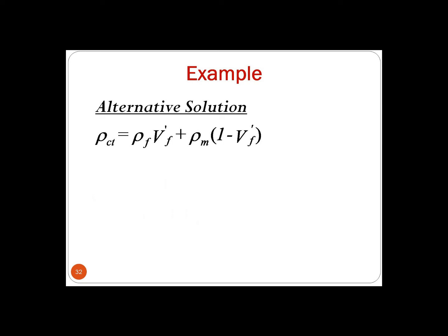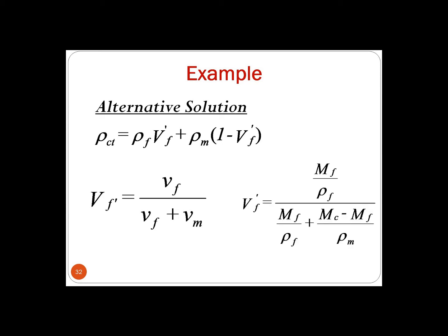The same problem can also be solved using the rule of mixture. The theoretical density of the composite is rho CT equals rho F times V'F plus rho M times (1 minus V'F), where V'F is the theoretical fiber volume fraction. V'F can be calculated as the volume of fibers divided by the volume of fibers plus volume of matrix, which equals (MF / rho F) divided by (MF / rho F plus (MC minus MF) / rho M).